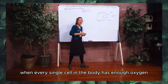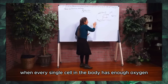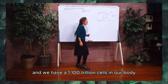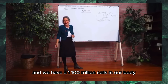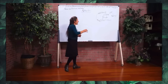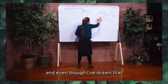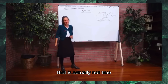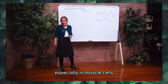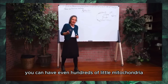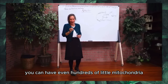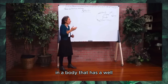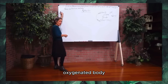When every single cell in the body has enough oxygen to produce that much energy, and we have 100 trillion cells in our body — and even though I've drawn it as if there's one pathway per cell, that's not true. Especially in muscle cells you can have even hundreds of little mitochondria. Just look at the potential of energy in a well-oxygenated body.